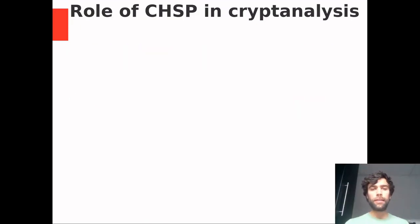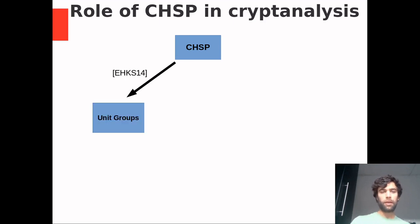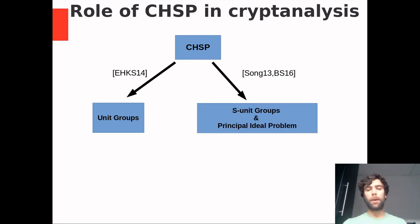Why is the continuous hidden subgroup problem relevant for cryptanalysis? First of all, I want to mention that the continuous hidden subgroup problem has many applications. One of them is in number theory. Eisenträger et al. proved that the computation of unit groups can be reduced to the continuous hidden subgroup problem. Later, this result was extended by Bias and Tsong to S-unit groups and principal ideal problems.